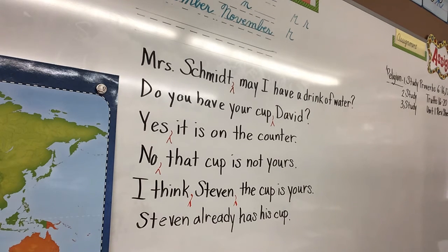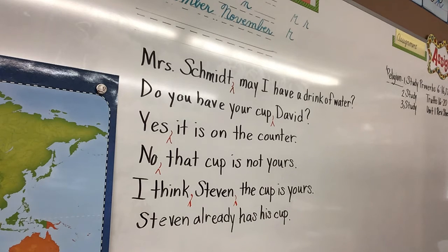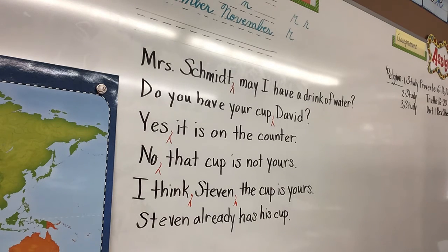All right, the next sentence is: his bright blue and yellow stripes startle the enemy. Capitalize H in his, and they already have punctuation. All right, the last one is: no, this colorful frog is not a good snack. There's a rule we just learned — insert a comma after yes or no at the beginning of a sentence. So there's the word no — insert the comma.